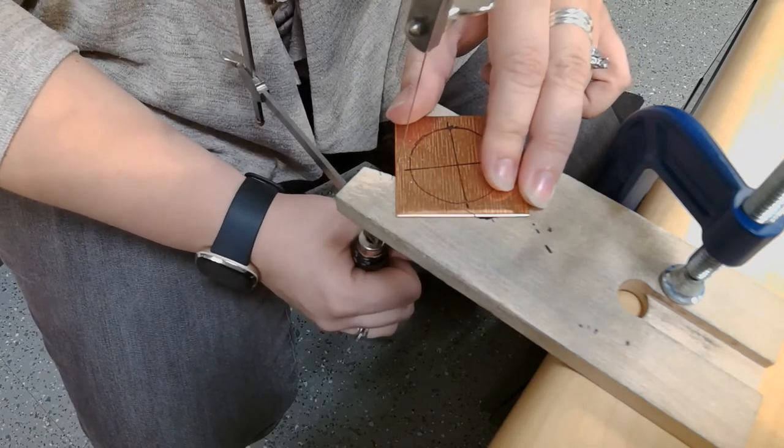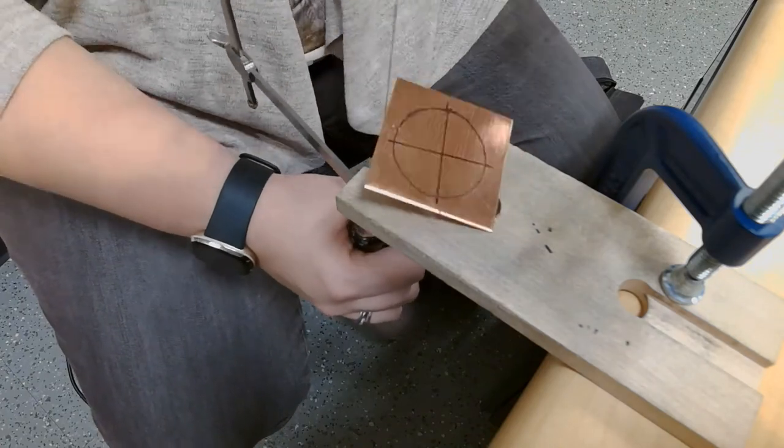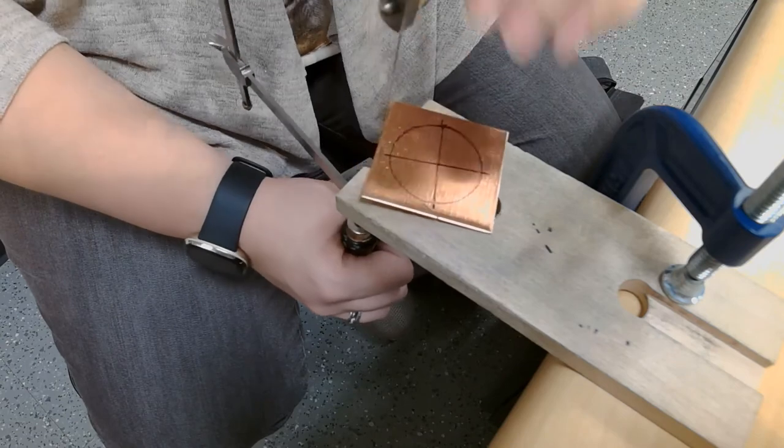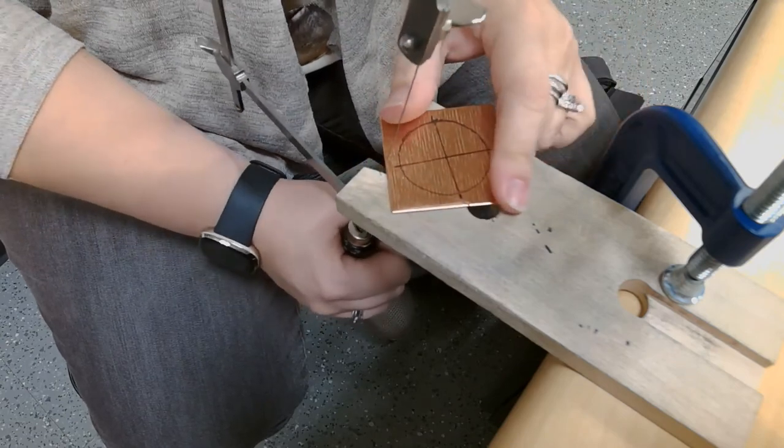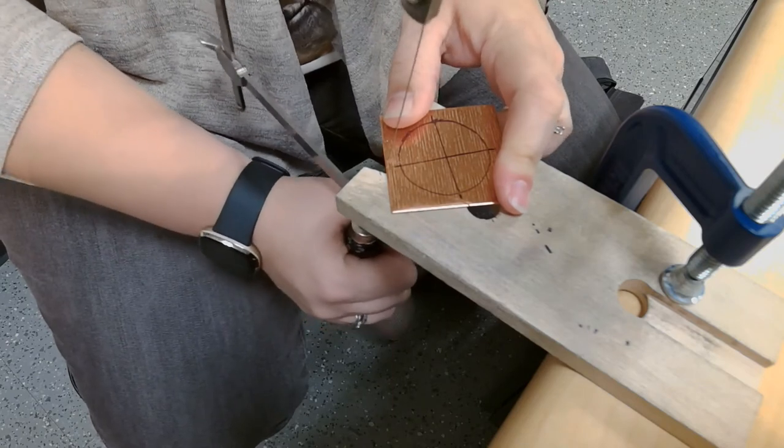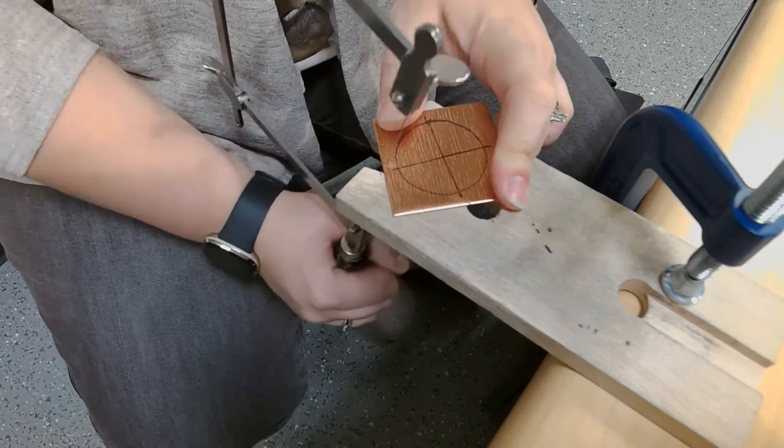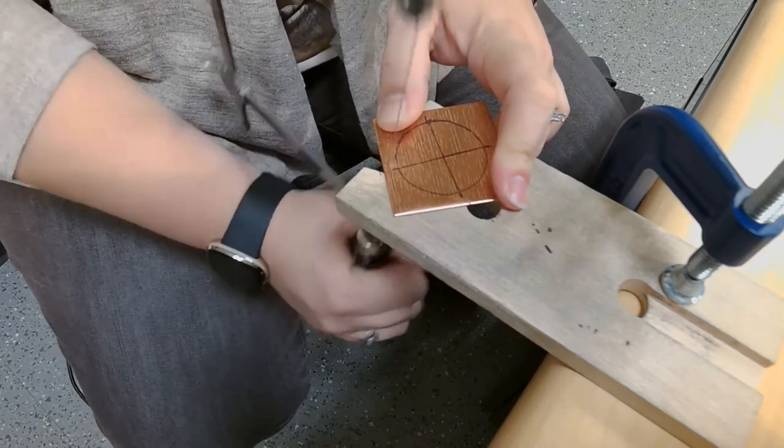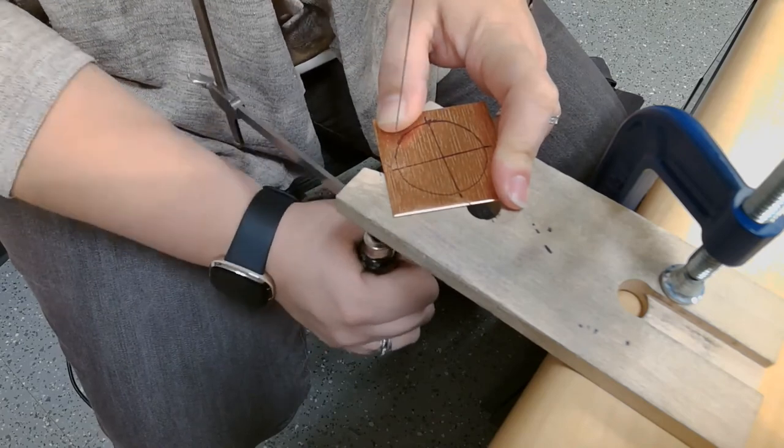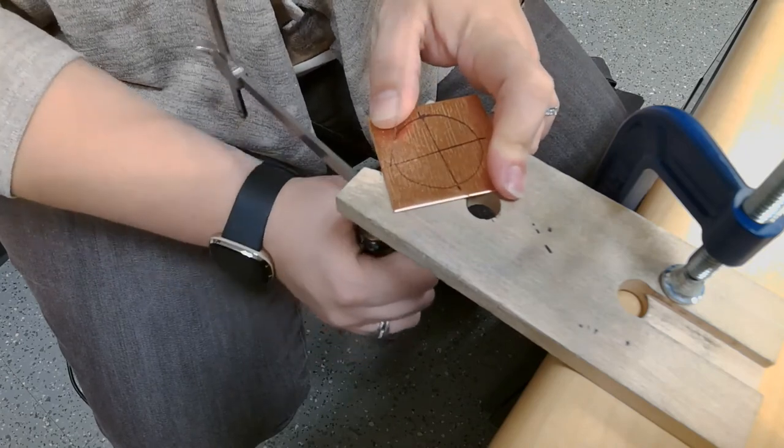And you want to have nice, long strokes. You don't want to have teeny. You don't want to go ehe, ehe, ehe, ehe. You want to go vr, vr, vr, as it's going. It'll make, it'll sound different when you guys, what you'll notice. So, as I'm cutting, can you hear this is really short strokes? If I do nice long, I'm using the whole saw. I'm not killing it. And I'm almost to my circle already.